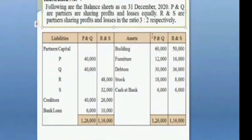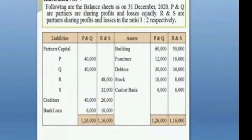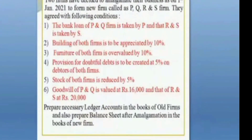The capital balances: P is 40,000, Q is 40,000, R is 48,000, S is 32,000. Creditors: 40,000 and 26,000. Bank loan: 6,000 and 10,000. Building: 60,000 and 50,000. Furniture: 12,000 and 16,000. Debtors: 30,000 and 36,000. Stock: 18,000 and 8,000. Cash at bank: 6,000 and 6,000.